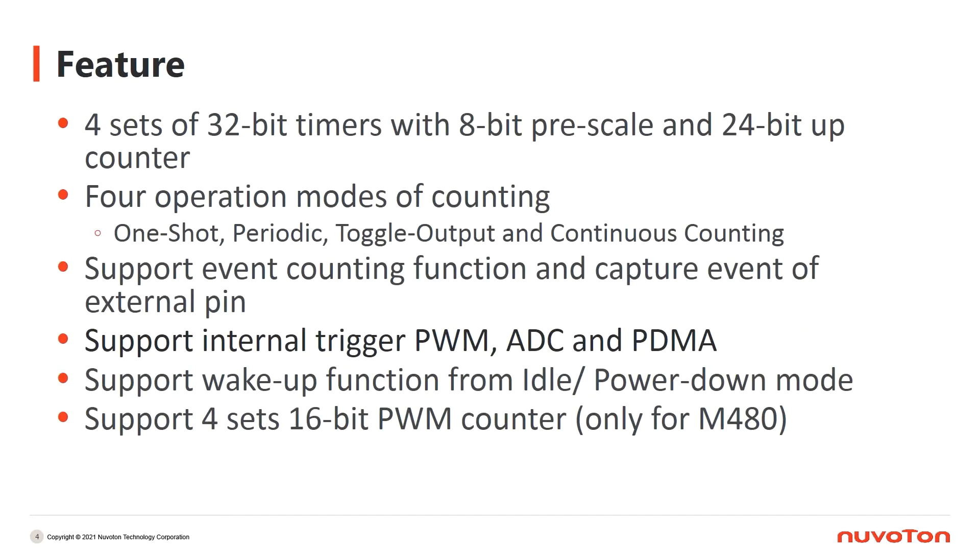The timer we provide in NuMicro M031 and M032 series has the following features. There are four sets of timers in our microcontroller. Each timer is 32-bit, which contains an 8-bit prescaler and a 24-bit up-counter. It has four operation modes of counting, which are one-shot, periodic, toggle-out, and continuous counting. We'll talk more about these operation modes later.